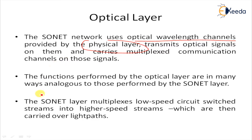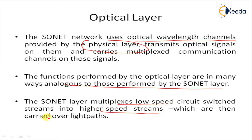The functions performed by the optical layer are in many ways analogous to those performed by the SONET layer. The SONET layer multiplexes low-speed circuits into high-speed streams which are then carried over the light path in the optical layer. The IP layer performs statistical multiplexing of packet-switched streams into high-speed streams, which are also carried over the light path in the optical layer.